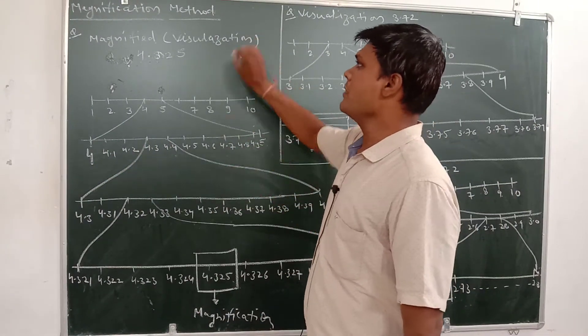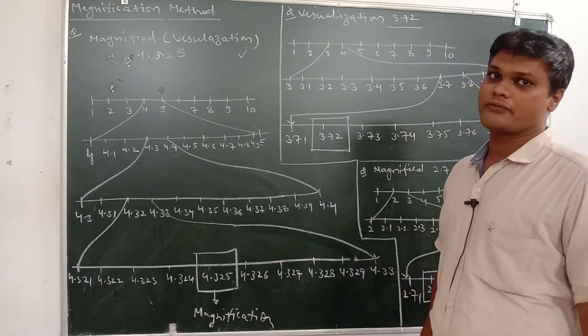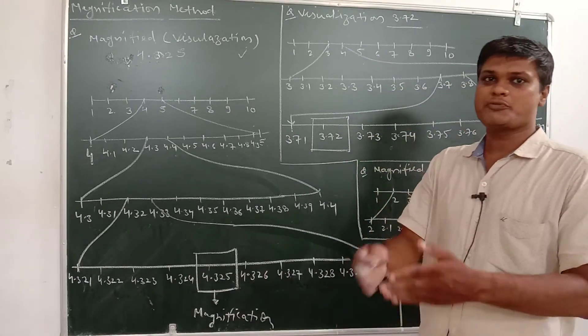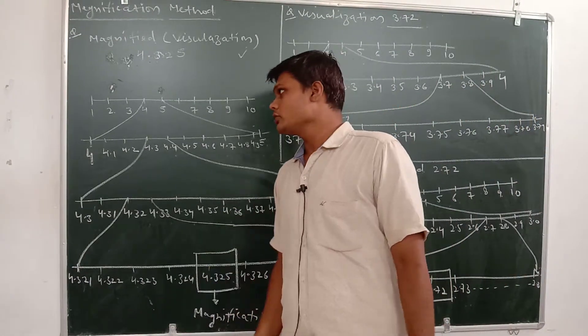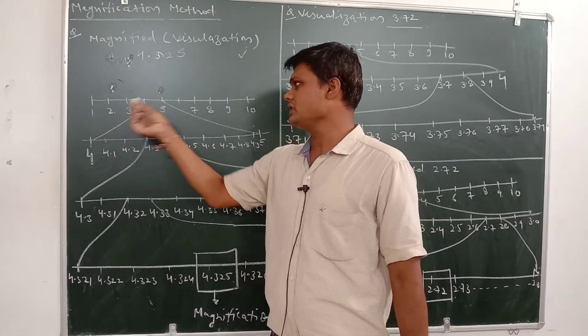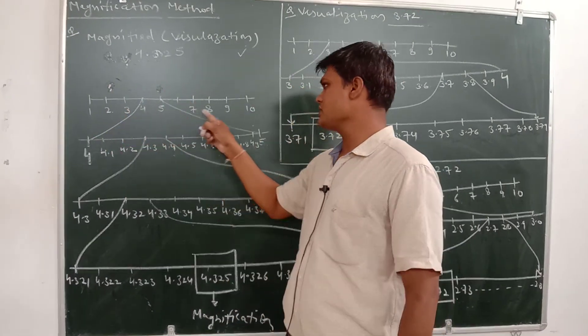So our first question is magnified visualization of 4.325, meaning up to this many numbers we have to show the intermediate numbers, we have to expand it. So first look where 4 comes. Between 0 to 10 or 1 to 10, it's 1, 2, 3, 4, 5, 6, 7, 8, 9, 10 - here comes our 4.